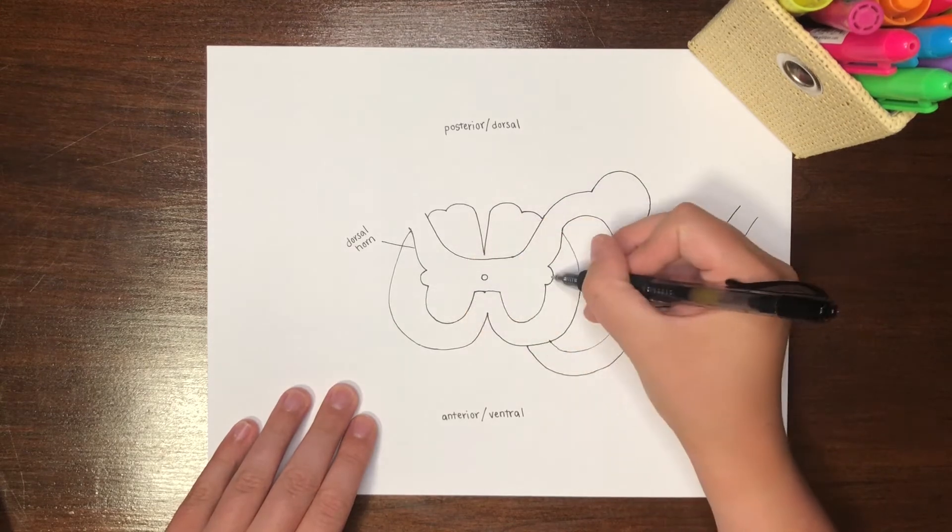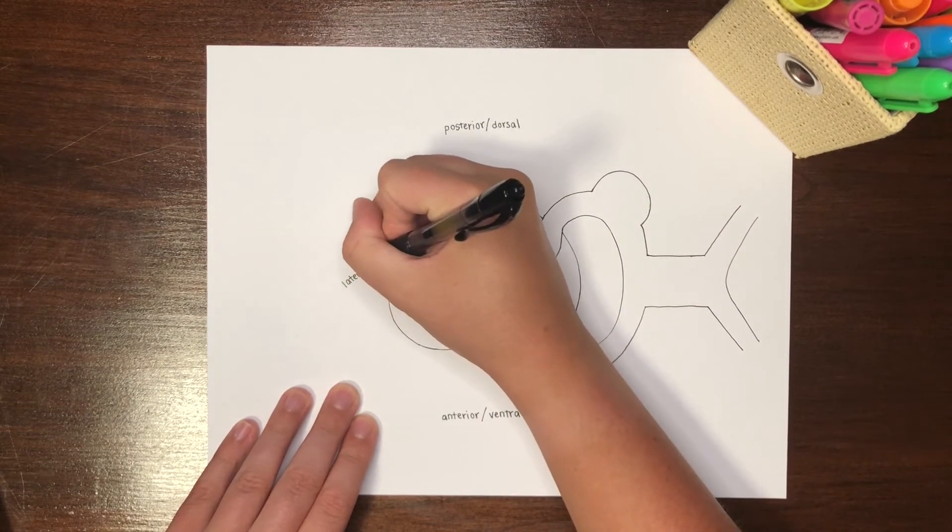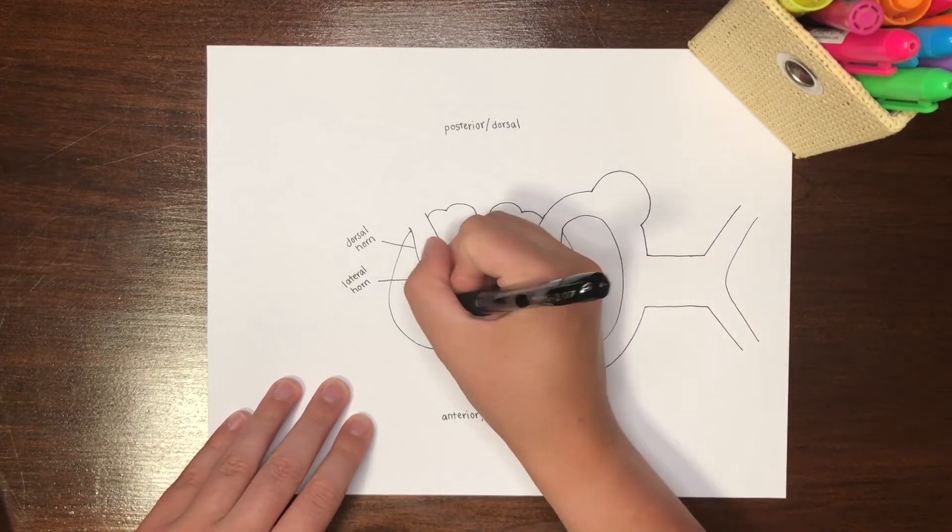Next, we have the lateral horn, which is your smaller bump, and the ventral horn anteriorly.